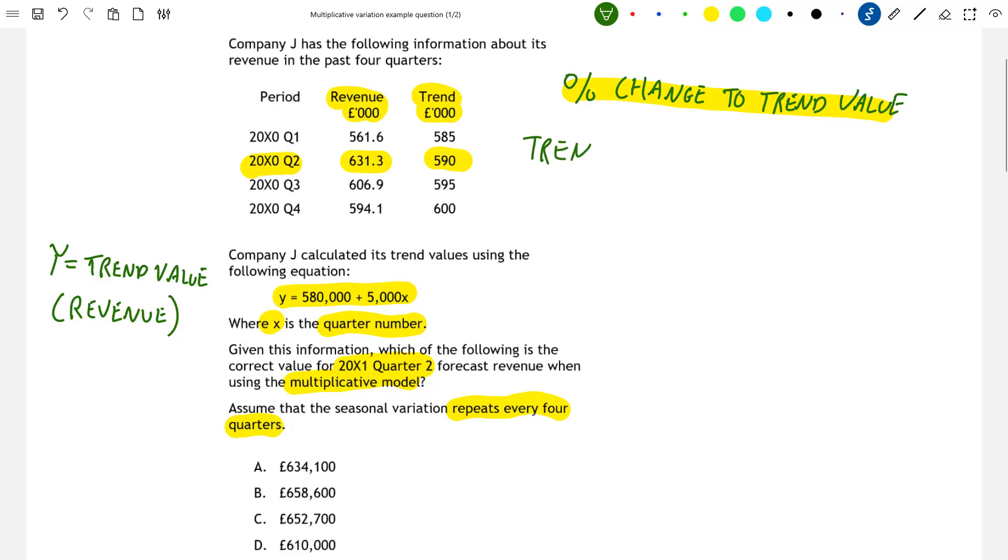So the trend value is equal to the actual value for the revenue in that period. Looking at our table our trend value was 590,000 pounds and our actual value for the revenue in this period was 631,300 pounds. So all we have to do to find our seasonal variation is to divide the actual value for revenue in that period by the trend value to obtain our figure for seasonal variation. So note that all we've done is rearrange this equation and this gives us a value of 1.07.